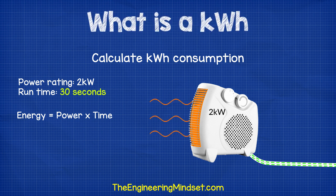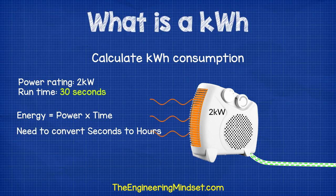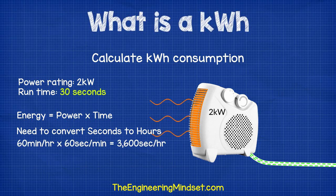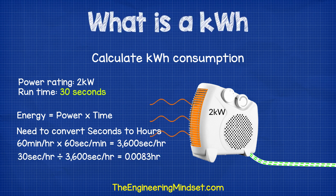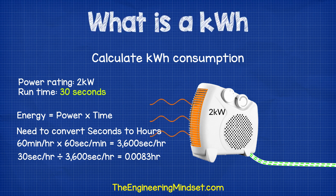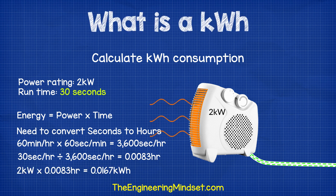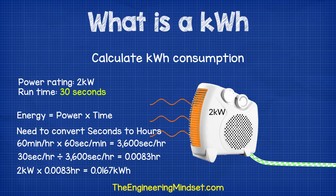But what if the heater only runs for 30 seconds? We can still use the energy formula, but because we're invoiced in kilowatt hours, we need to convert the seconds into hours. There are 60 minutes in an hour and 60 seconds per minute, so 60 multiplied by 60 gives us 3,600 seconds per hour. We can then convert the 30 seconds runtime into hours by dividing 30 by 3,600, which means we will run for 0.0083 hours. So 2 kilowatts multiplied by 0.0083 hours equals 0.0167 kilowatt hours.